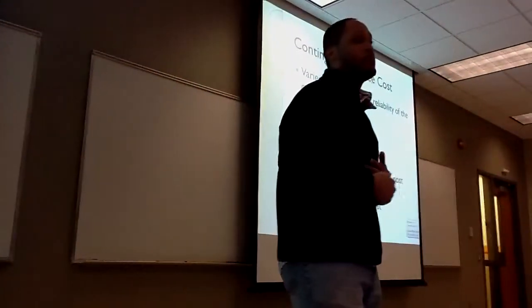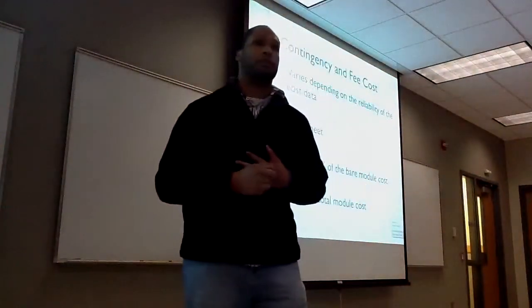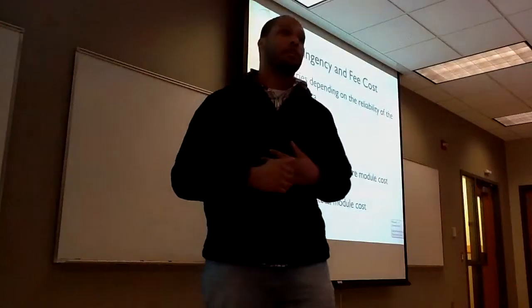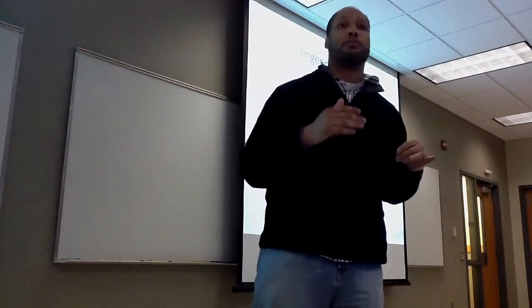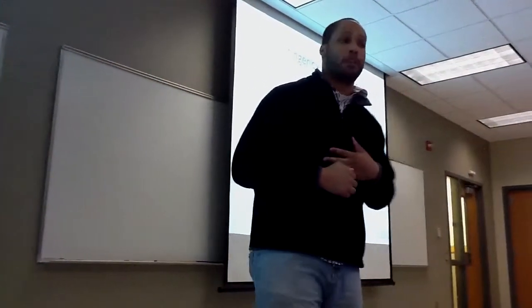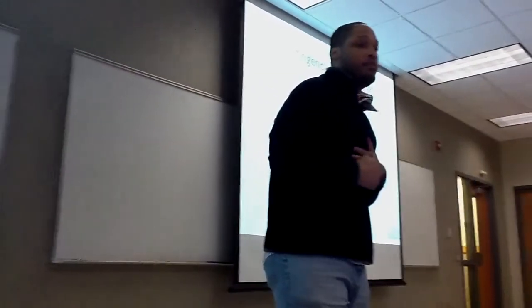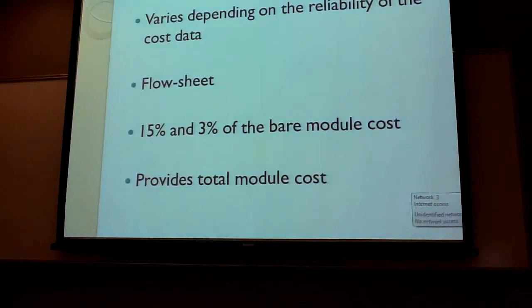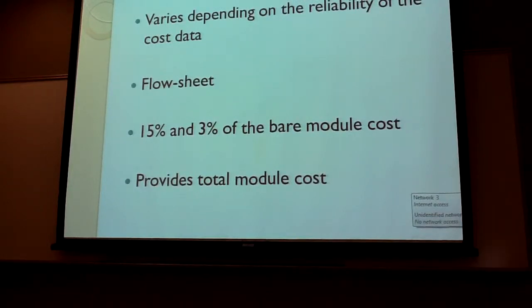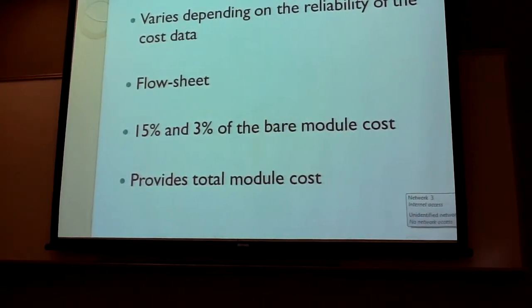Contingency fee costs are very dependent on the reliability of your cost data and the completeness of your process flow diagram. 15% to 3% will be added to your bare module costs, and this will give you your total module costs. That 15% and 3% comes from your contingency fee costs.